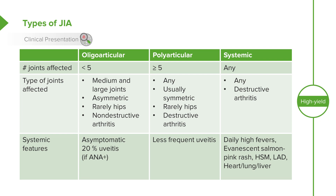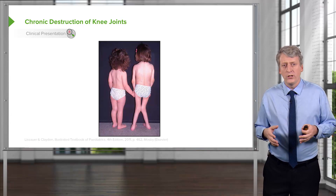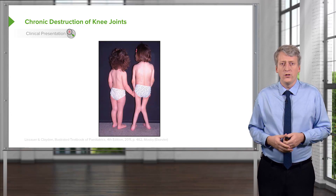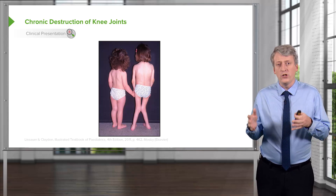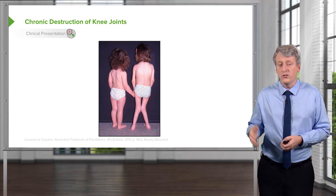Here's an example of how children can be affected. These are two sisters, and this four-year-old is substantially affected in terms of her ability to have functioning joints long-term. This is the chronic destruction you see in what is likely polyarticular JIA in this child — it's symmetric and involves multiple joints.